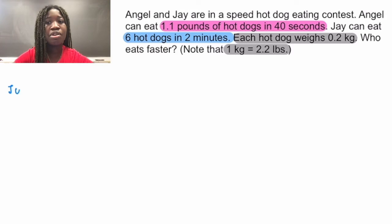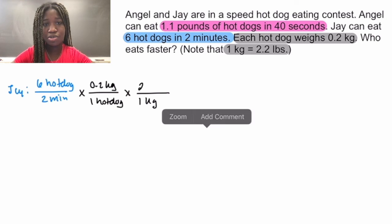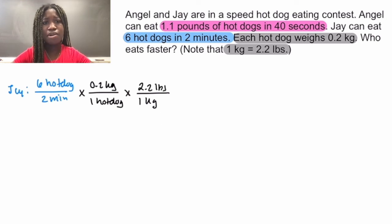Starting with Jay, we know that Jay can eat 6 hot dogs in 2 minutes. We know that each hot dog weighs 0.2 kilograms. We know that 1 kilogram is 2.2 pounds. So right now we're in pounds per minute.